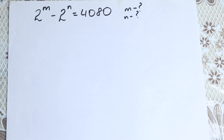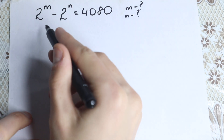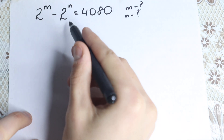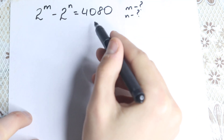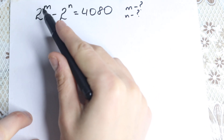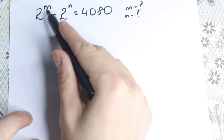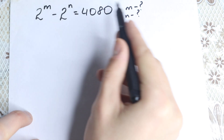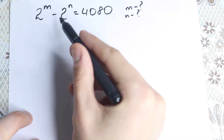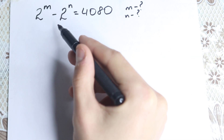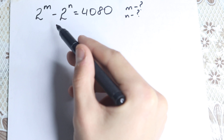Hello everyone. In this video we are going to solve this interesting exponential problem. We have 2 to the power m minus 2 to the n equal to 4080. As you can see, there are different variables m and n, and we need to find them with one equation. One part of students solve this with log, but I hope you don't do this because solving with logarithm is hard.